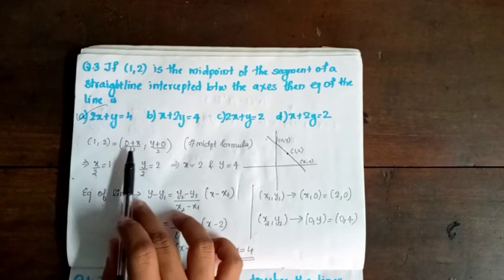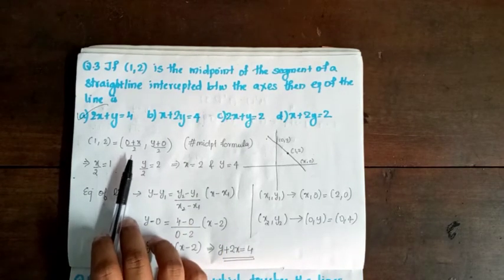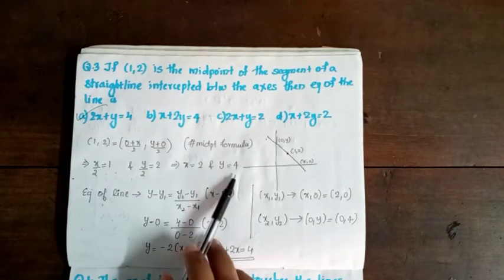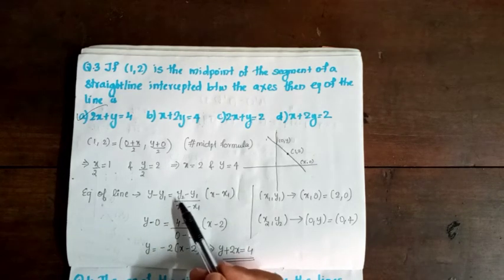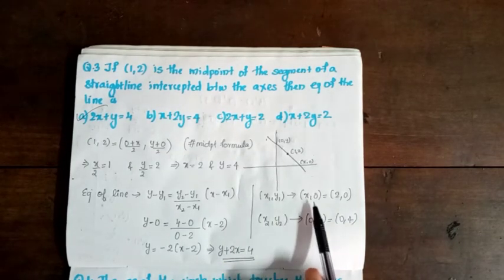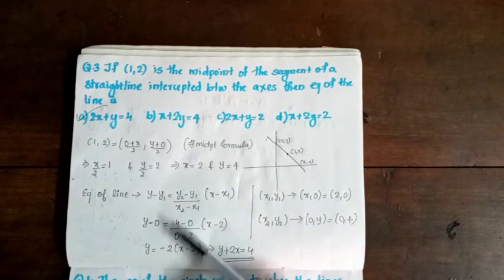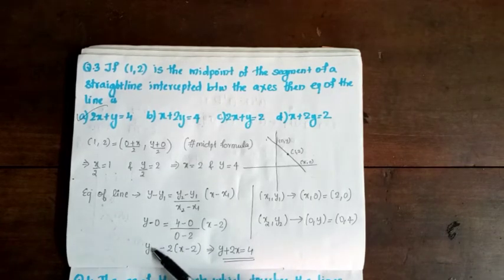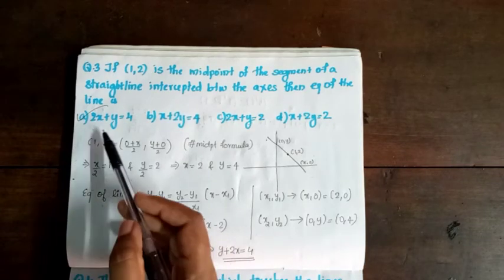Using the midpoint formula: (1, 2) equals (0 plus x)/2, (y plus 0)/2. Solving gives x equals 2 and y equals 4. Using the two-point form with (x₁, y₁) = (2, 0) and (x₂, y₂) = (0, 4), the equation becomes y equals minus 2 times (x minus 2), which simplifies to y plus 2x equals 4. So option A is correct.